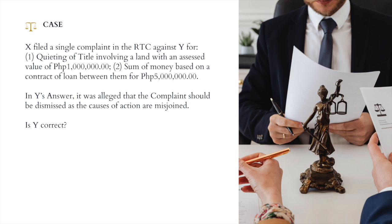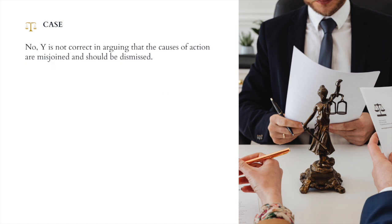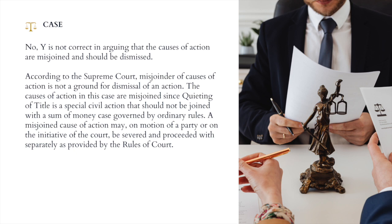Here is a case question. X filed a single complaint in the Regional Trial Court against Y for: first, quieting of title involving a land with an assessed value of 1 million pesos; and second, sum of money based on a contract of loan between them for 5 million pesos. In Y's answer, it was alleged that the complaint should be dismissed as the causes of action are misjoined. Is Y correct? The answer is no — Y is not correct in arguing that the causes of action are misjoined and should be dismissed. According to the Supreme Court, misjoinder of causes of action is not a ground for dismissal of an action.